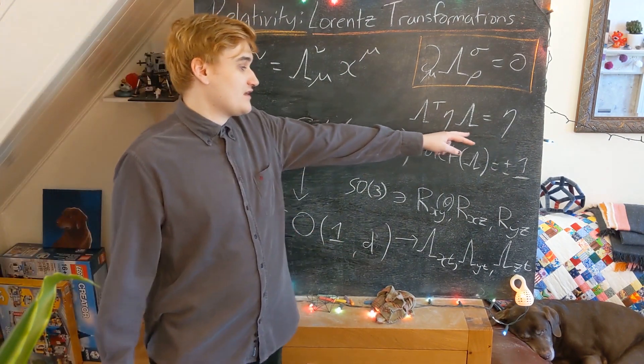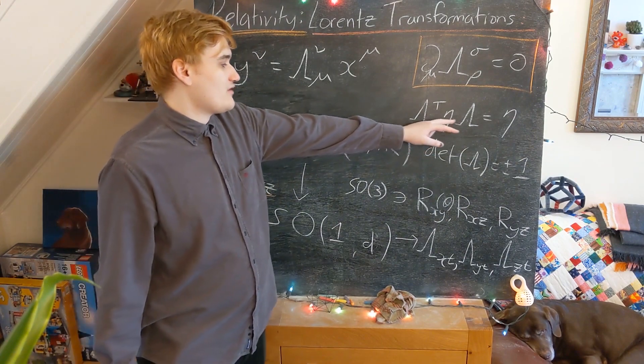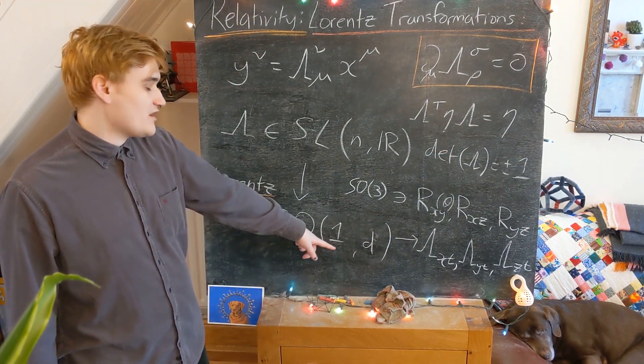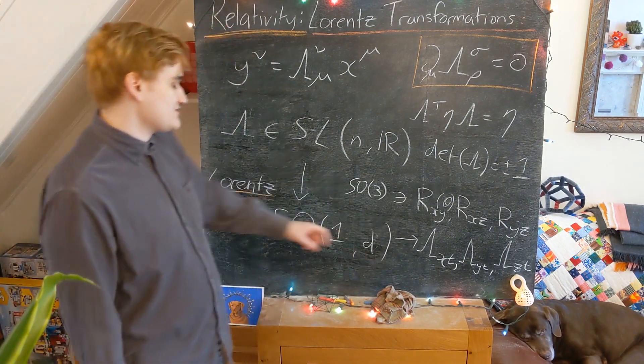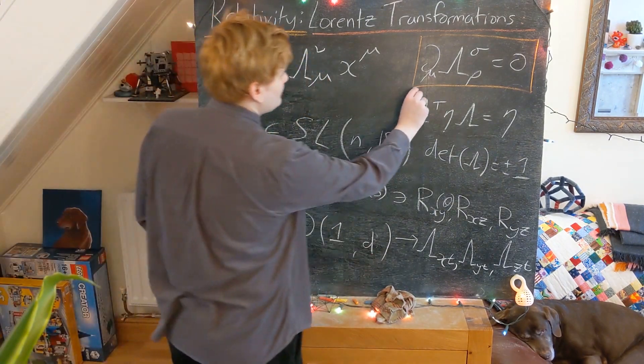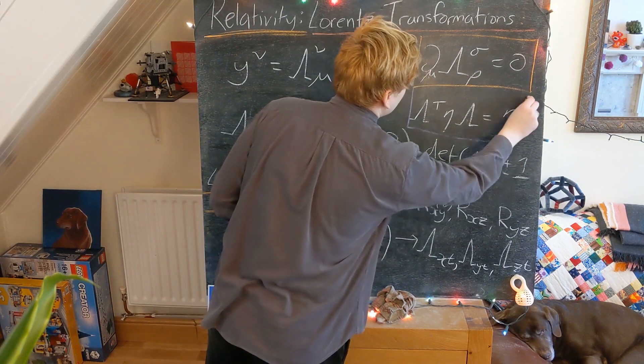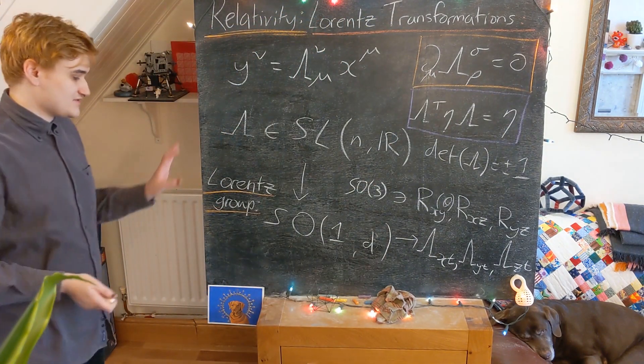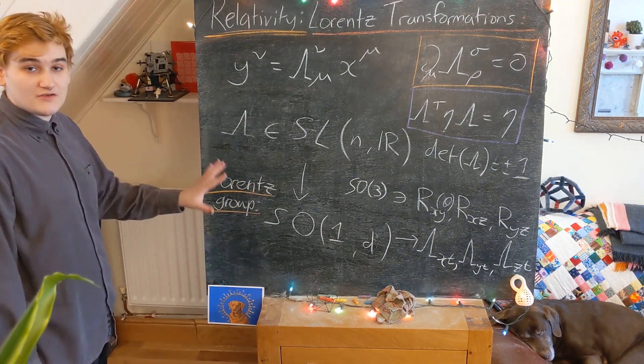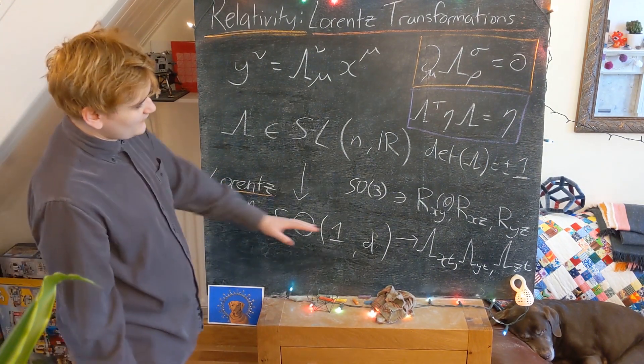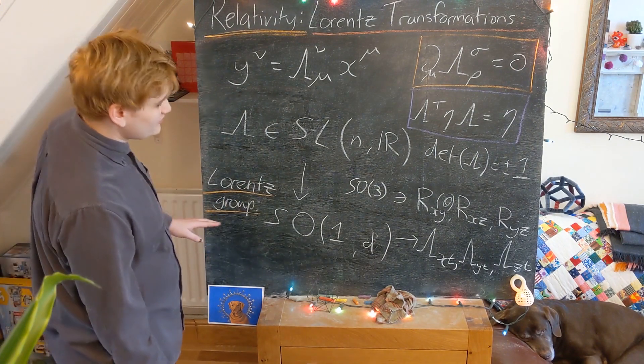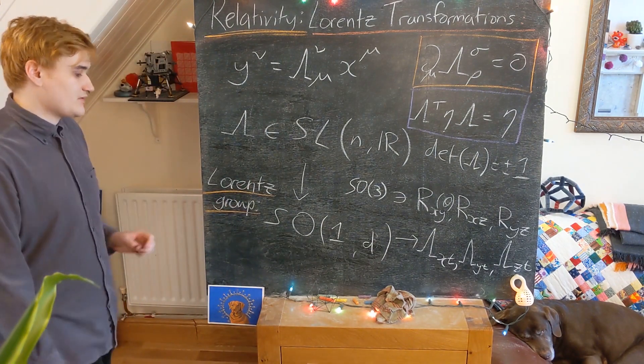And so it satisfies a condition that looks like this, where we have our matrix that has some amount of minus ones, in this case just one, and then some amount of pluses. So I'm going to talk more about the geometric structure of this group in some future videos. But for now I just want to already start using this terminology, that this set of all of our possible Lorentz transformations forms a group known as the Lorentz group.